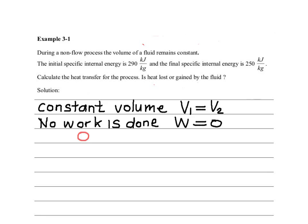Q minus W is equal to delta U. But W is equal to zero. Therefore, the heat transfer Q is equal to the change of the internal energy. What we need to do is, if we know the change of the internal energy, we will be able to calculate the heat transfer.